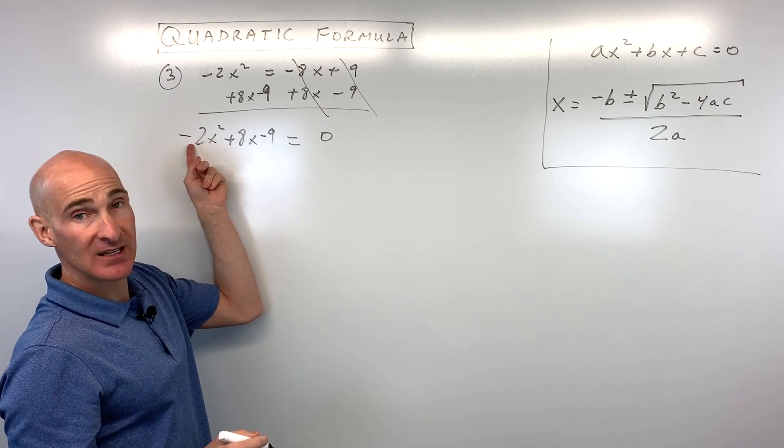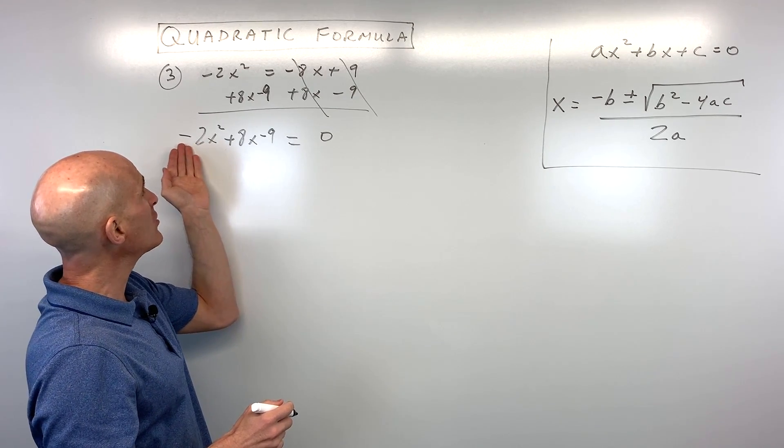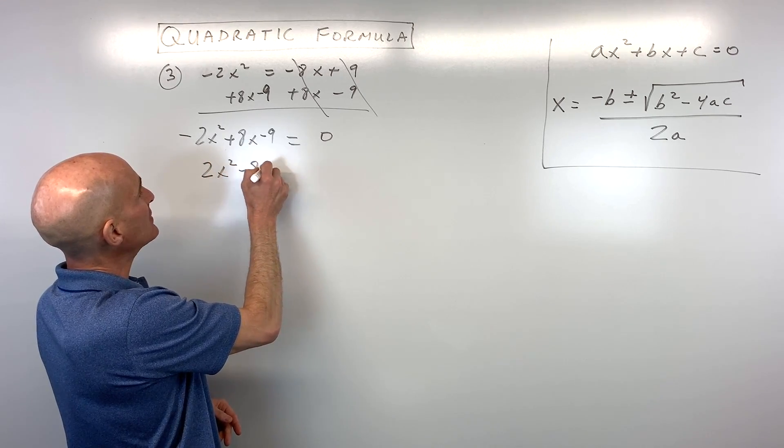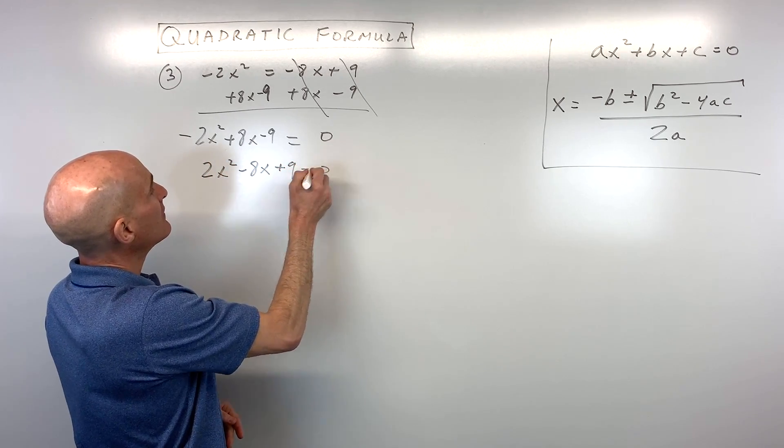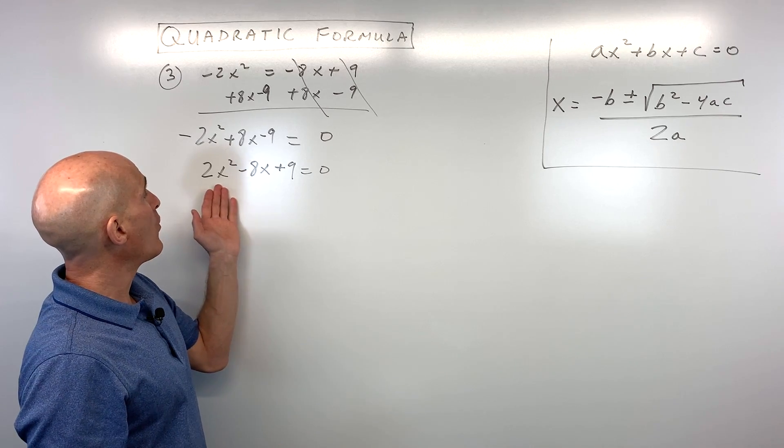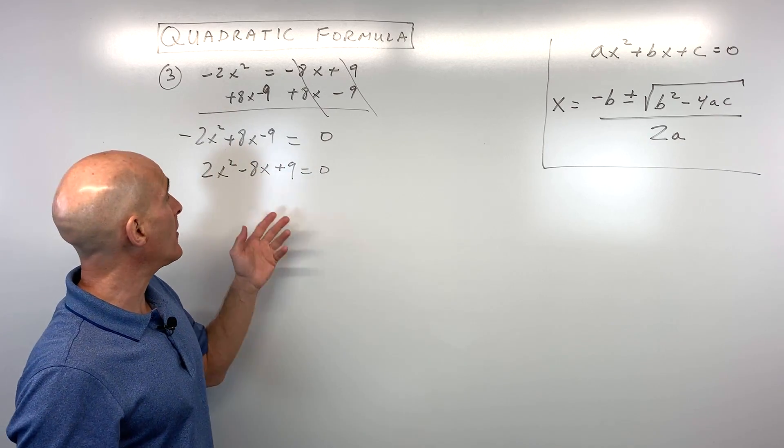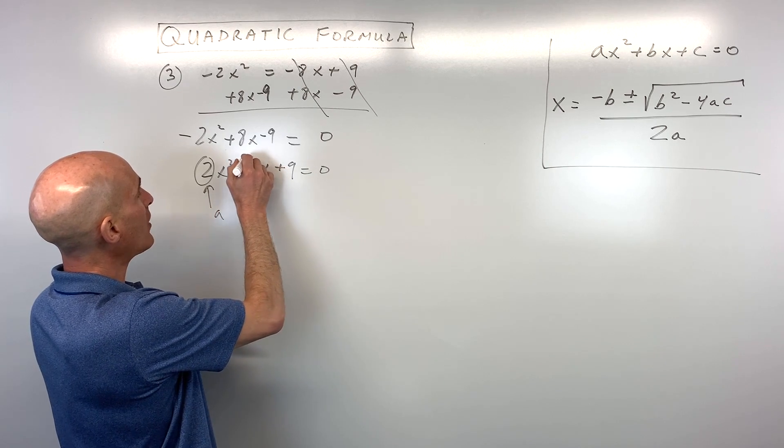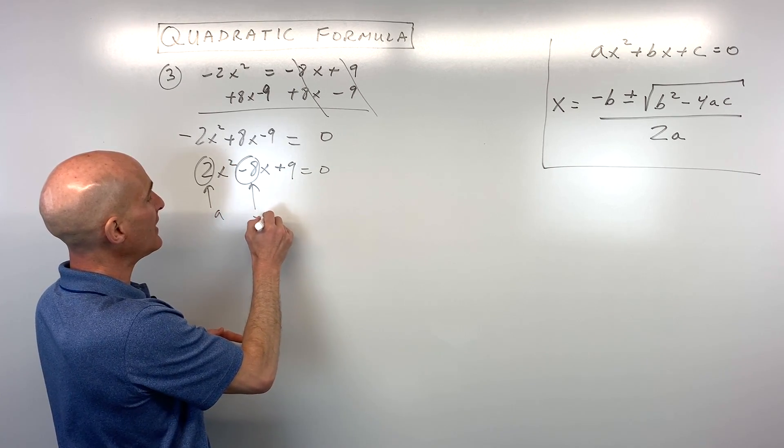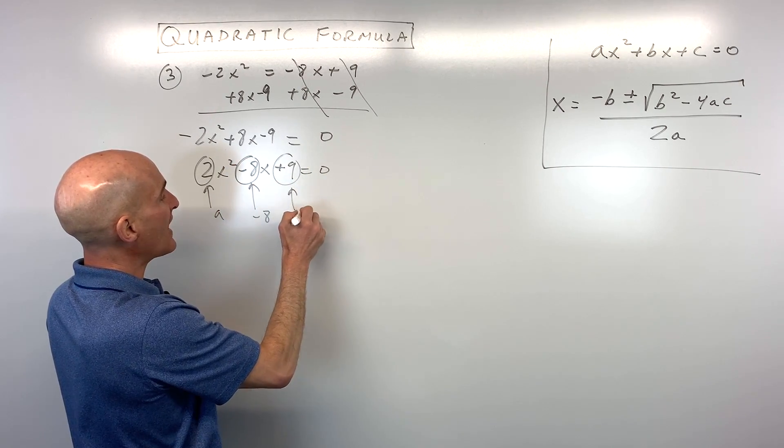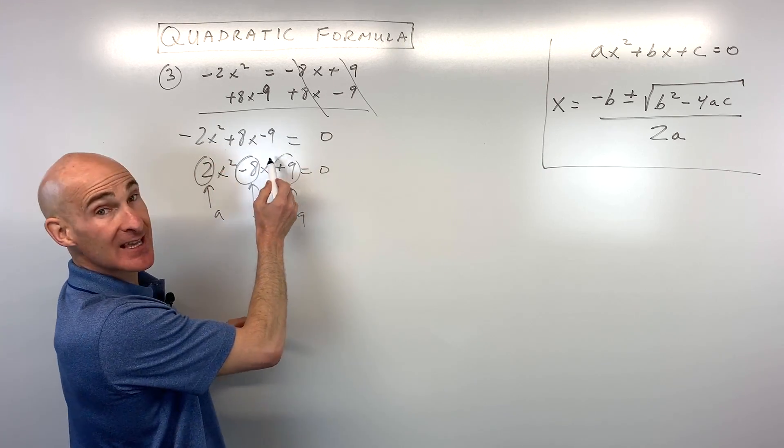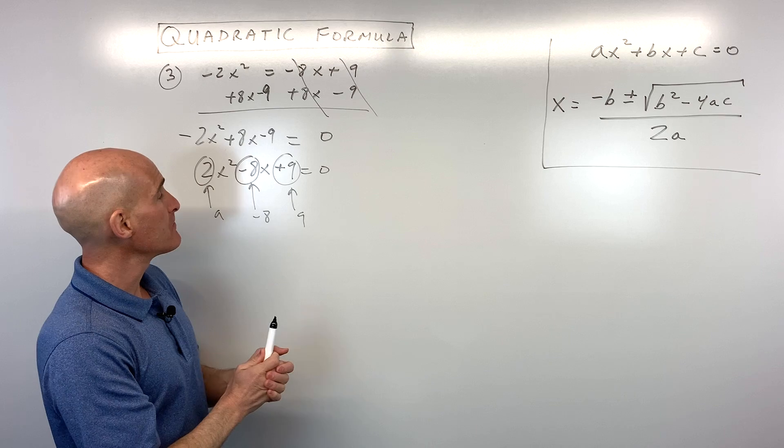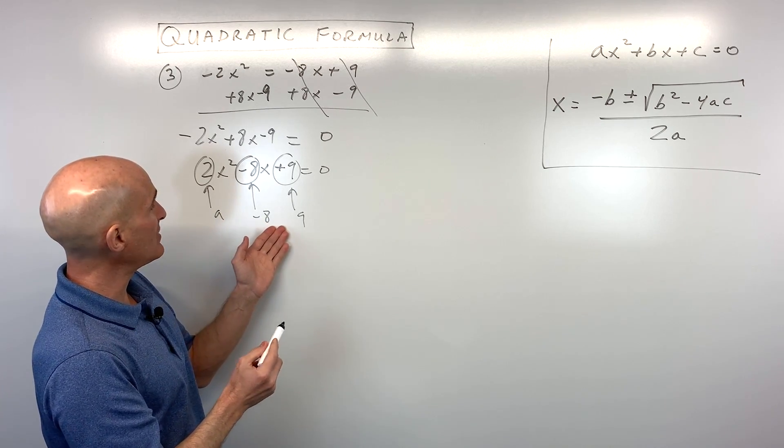Now, if you want, because this is a leading coefficient of negative 2, we could multiply everything through by negative 1. This way, the signs will actually flip just to make it a little bit neater if you want. It doesn't matter. Either way, you're going to get the same result. So now we want to identify our a value, which is 2, our b value, which is negative 8, and our c value, which is 9. And remember, you want to put it in descending order from x squared, x to the first, and then the constant. So it goes down in degree.